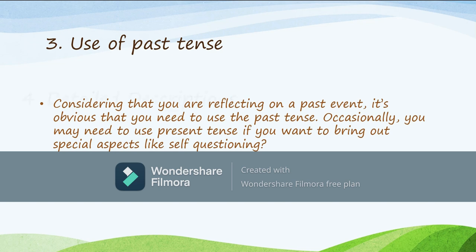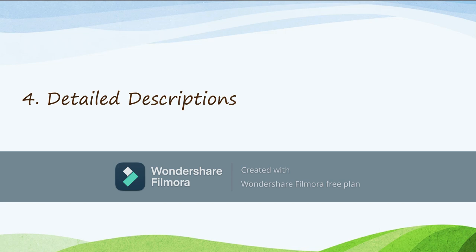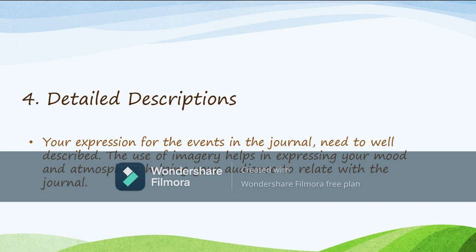Feature number four: detailed descriptions. Your expression of the events in the journal needs to be well described. The use of imagery helps in expressing your mood and atmosphere, helping your audience to relate with the journal. Remember, you're writing about thoughts, feelings, fears, and hopes — the only way to let your audience into those feelings is by ensuring that your descriptions are well detailed. It makes it easier for readers to relate to what you're writing about, so include plenty of imagery and detailed descriptions.